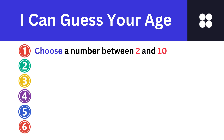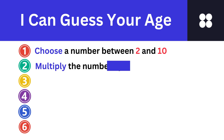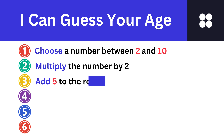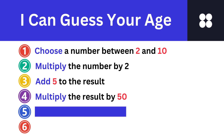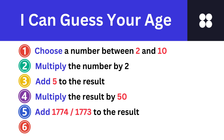Step 1: Choose a number between 2 and 10. Step 2: Multiply the given number by 2. Step 3: Add 5 to the answer. Step 4: Multiply that number by 50.